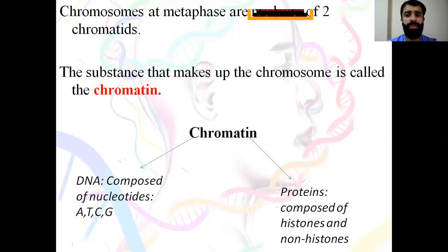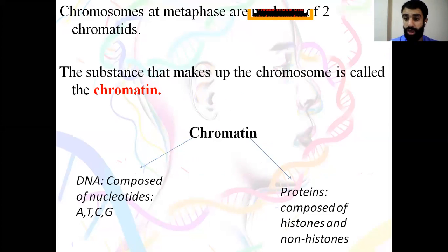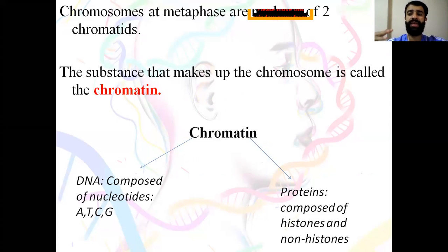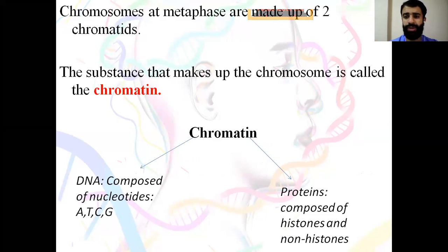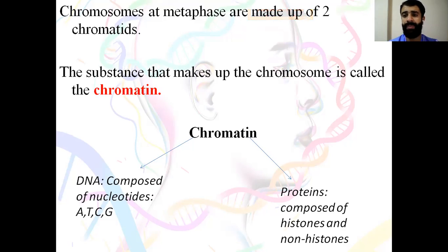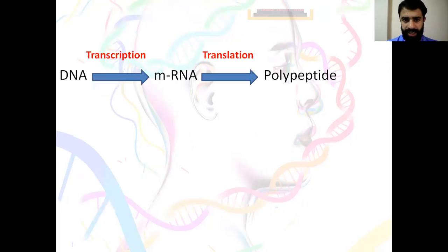These chromosomes are made up of two sister chromatids. The substance that makes up the chromosome is called chromatin. Chromatin is divided into two different forms: either DNA, composed of nucleotides — adenine, thymine, cytosine, and guanine (A, T, C, and G) — and proteins, composed of histones and non-histones.